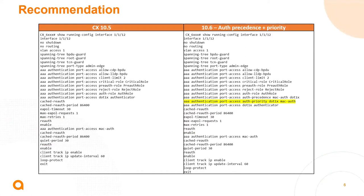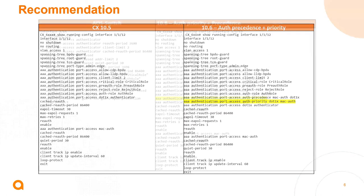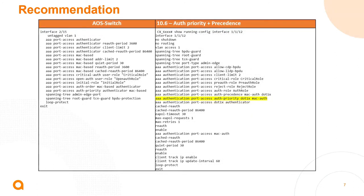The recommended configuration for AOSCX 10.5 is on the left-hand side. If you want to use the 10.6 auth priority and precedence together, the configuration is on the right-hand side. The highlighted configuration is what's new in the 10.6 image. Note that auth priority and concurrent authentication are orthogonal features — concurrent authentication serves the same purpose just by enabling on the port, whereas for clients needing supplicant download with auth precedence, you need to configure auth priority to achieve the same functionality. Let's see the demonstration in the next few minutes.